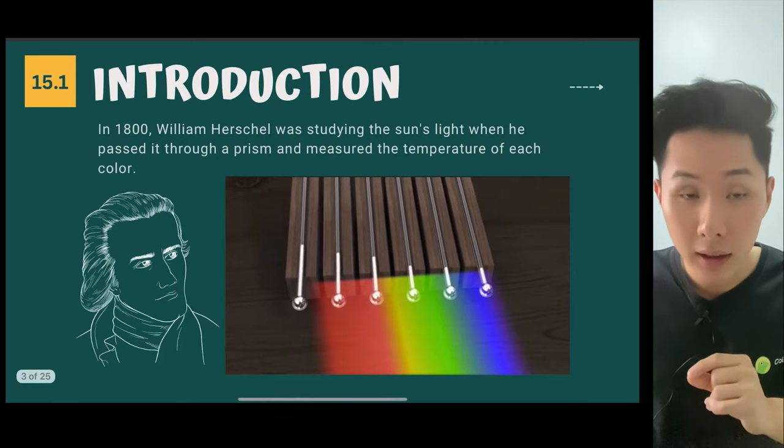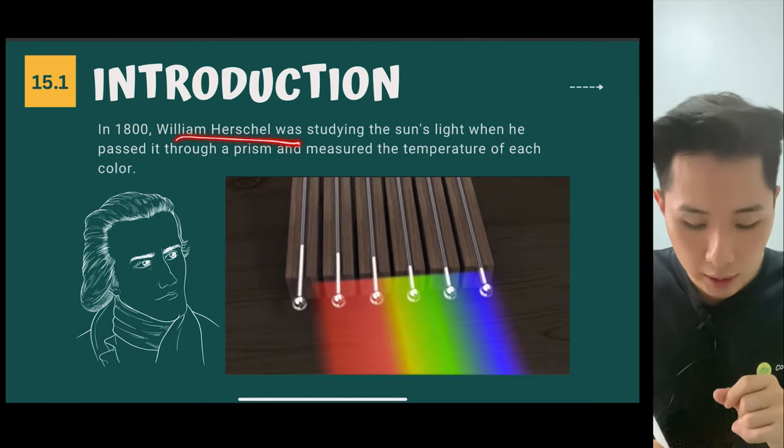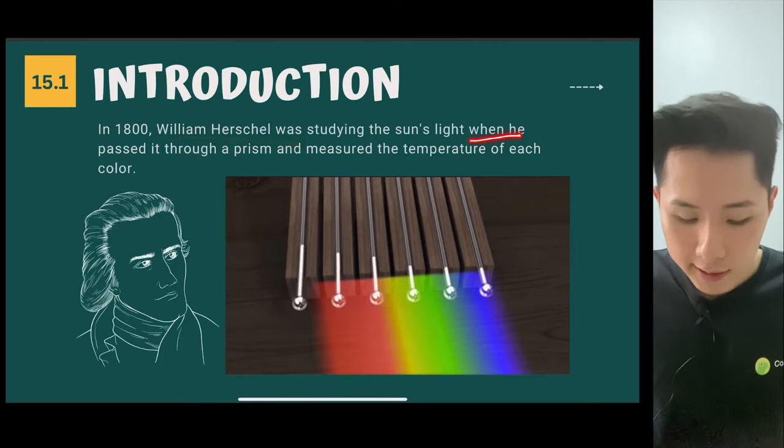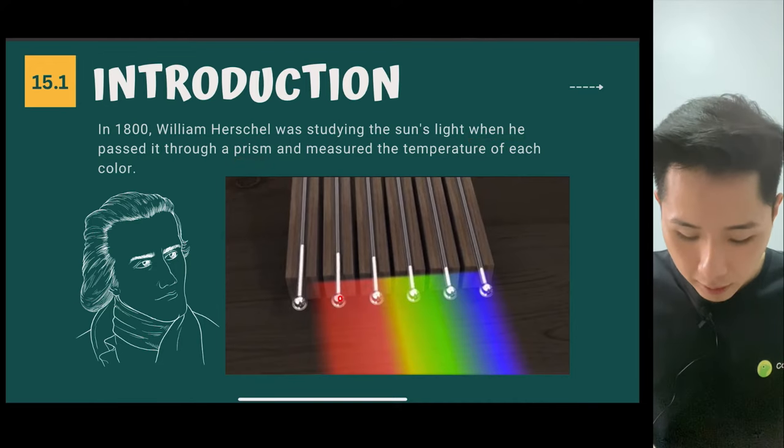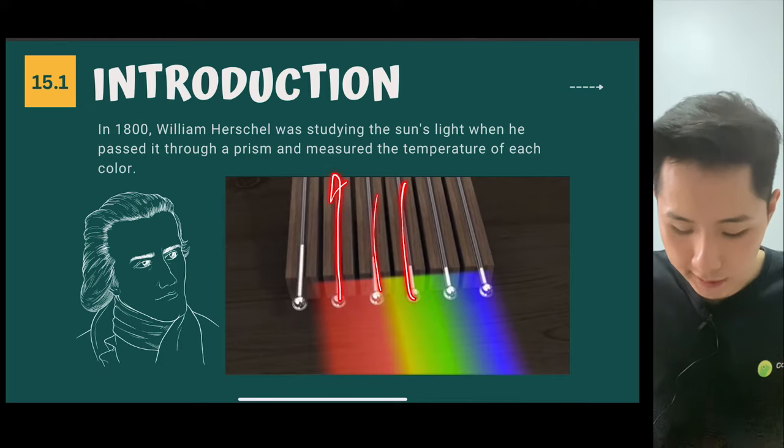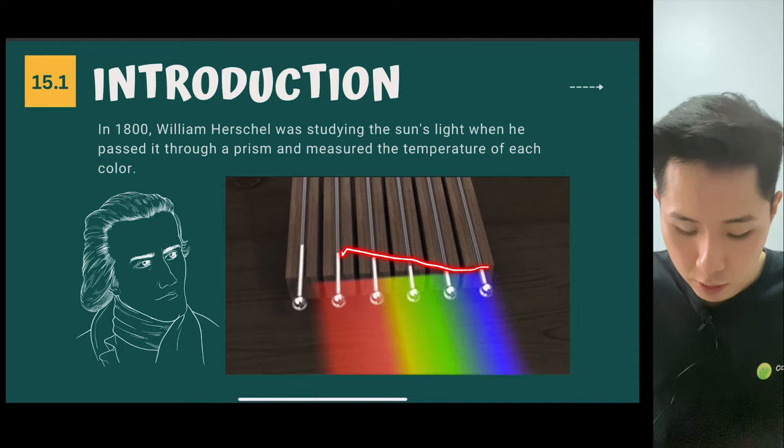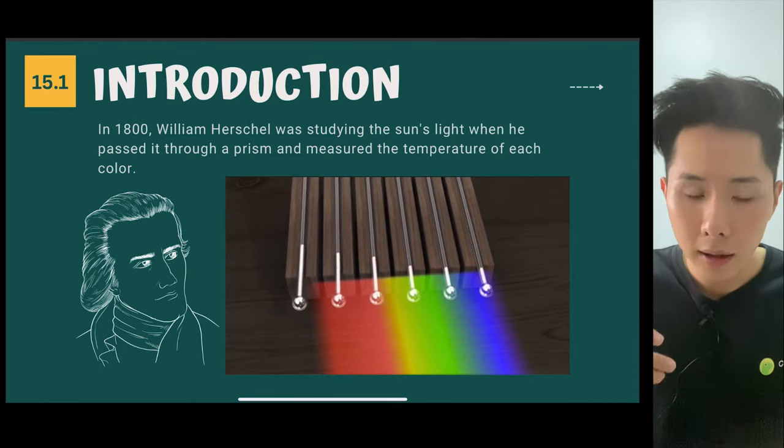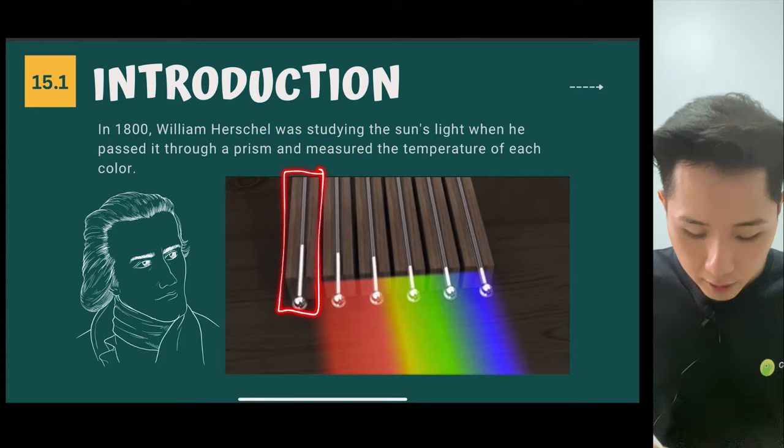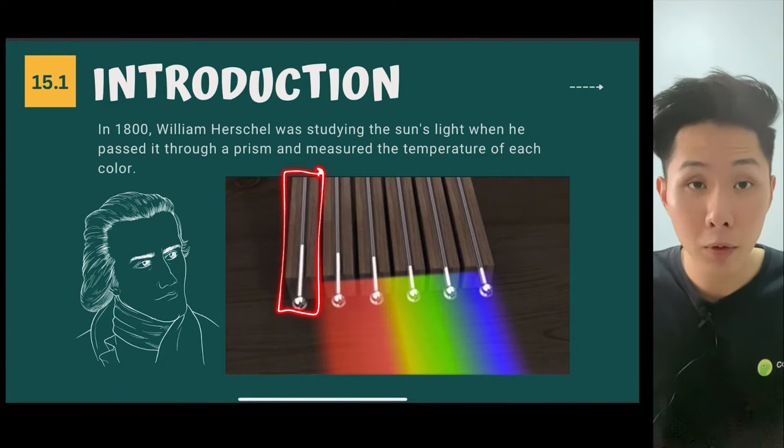So by using this theory, William Herschel, a scientist, he was studying sunlight when he passed it through a prism, and he tries to measure what is the temperature of this light. So these are the lights, and you can see that from violet all the way to red, the temperature is rising. And he discovered that there is an invisible light here that's causing even more temperature rise.